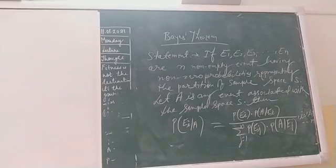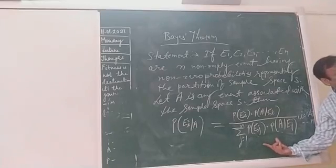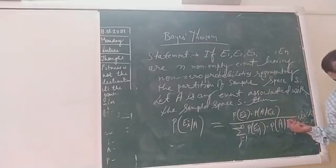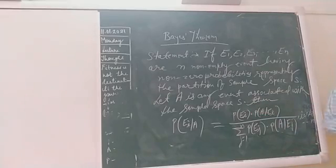So as you have already studied about the partition of sample space, I think somehow it is going to be very clear what is the Bayes' theorem. Bayes' theorem is just the extended format of the conditional probability. If you see, what is the basic of probability? You will say sir, favorable outcomes by total number of possible outcomes.